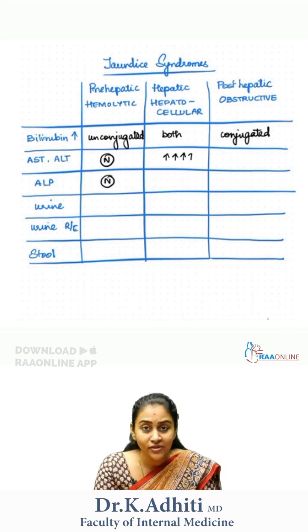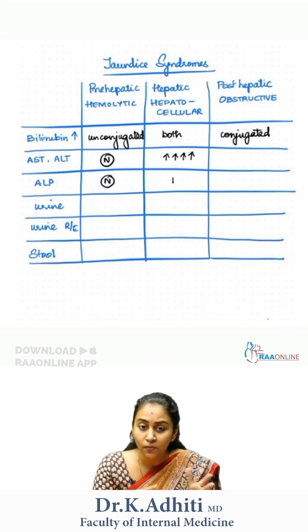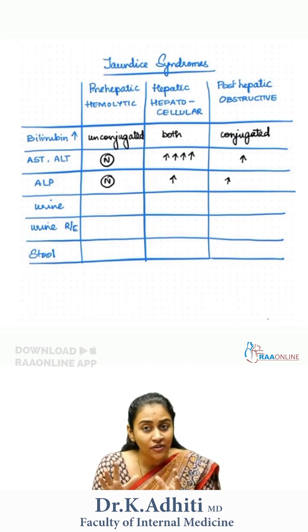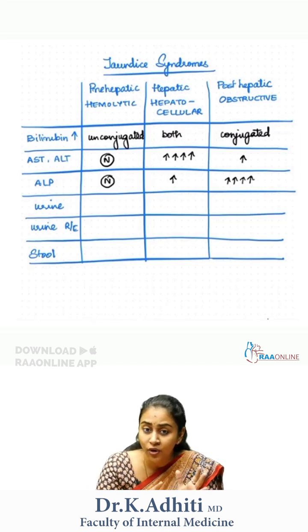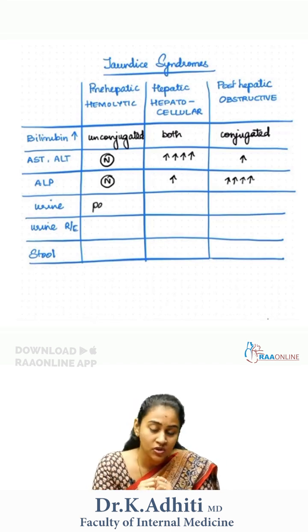When you look at the LFT, if the liver enzymes are normal, it's probably hemolytic. If there is significant elevation of transaminases, it's hepatocellular, and significant elevation of ALP (ALKFOS) is going to be obstructive.